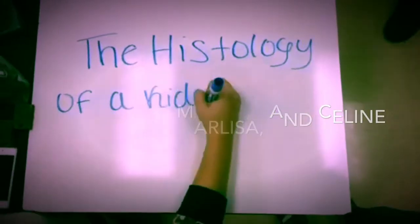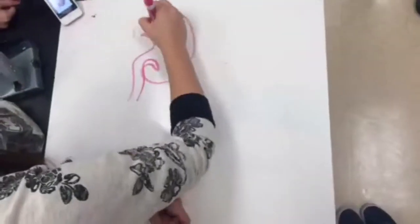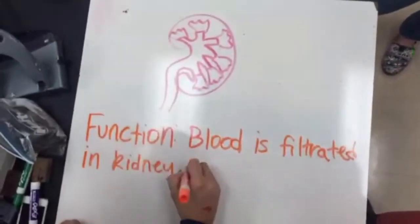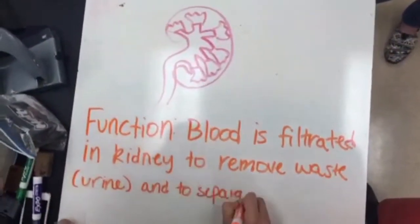The histology of a kidney. Blood is filtrated in the kidney to remove waste such as urine and to separate the blood from the waste.